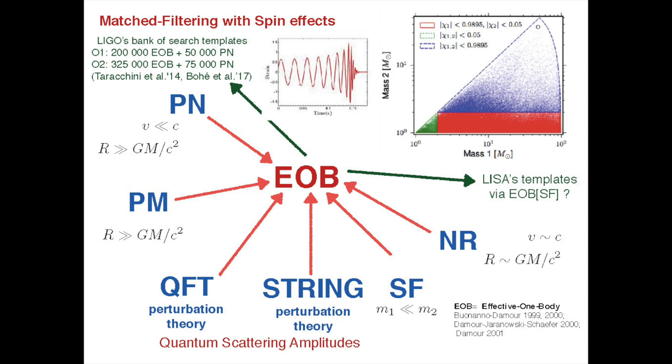Why do we need an analytical description of the waveform? Because when the gravitational wave passes on Earth, the waveform is lost in the broadband noise — you cannot see it in the full signal, it is 40 times smaller than the broadband noise. You need a technique to extract it from the noisy output of the detectors. This technique is matched filtering: if you know the shape of the gravitational wave signal you look for, you can correlate the noisy output with this and find if this signal is present.